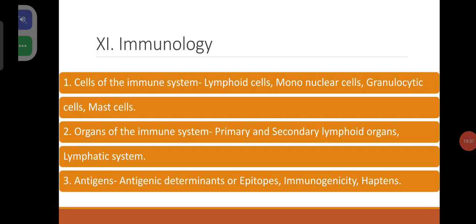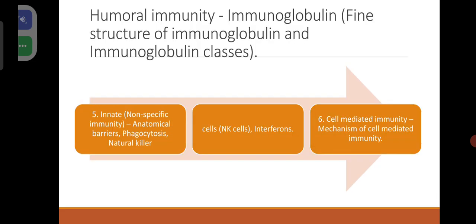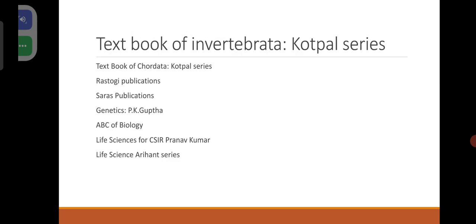Coming to immunology: cells of the immune system — lymphoid cells, mononuclear cells, granulocytic cells, mast cells. Organs of the immune system: primary and secondary lymphoid organs, lymphatic system. Antigens, antigenic determinants or epitopes, immunogenicity, haptens. Humoral immunity: immunoglobulin, fine structure of immunoglobulin and immunoglobulin classes. Innate immunity: anatomical barriers, phagocytosis, natural killer cells, interferon. Cell-mediated immunity and its mechanism. This is of course a bird's eye view.